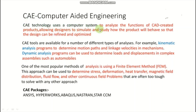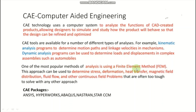CAE technology uses a computer system to analyze the function of CAD-created products, allowing designers to simulate and study how the product will behave so that the design can be refined and optimized. CAE tools are available for a number of different types of analysis. The first is kinematic analysis, which is used to determine the motion path and velocity in a mechanism. The second is dynamic analysis, which can be used to determine the load placement in complex systems such as automobiles or suspension systems. One of the most important methods of analysis is the Finite Element Method.